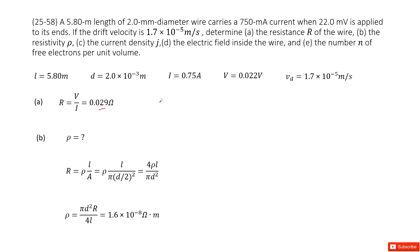The next part asks for the resistivity. We can write resistance as resistivity ρ times length divided by cross-sectional area A, where A equals π r squared, and r equals diameter over 2. Solving for ρ, we get an expression where all quantities are given, so we input those values to get the answer.